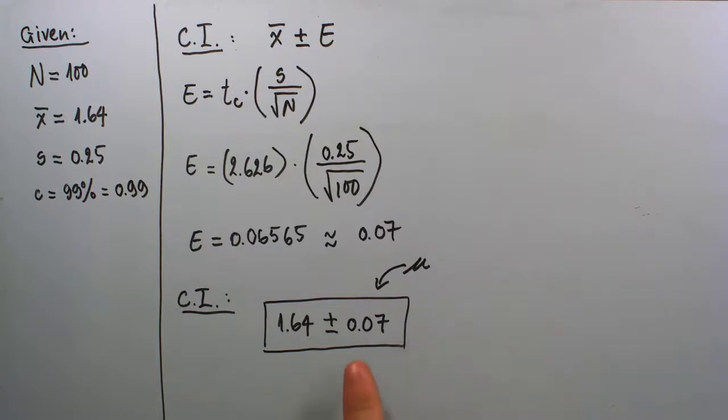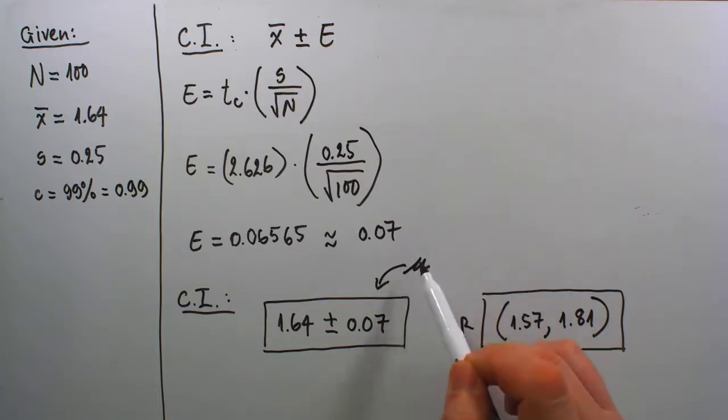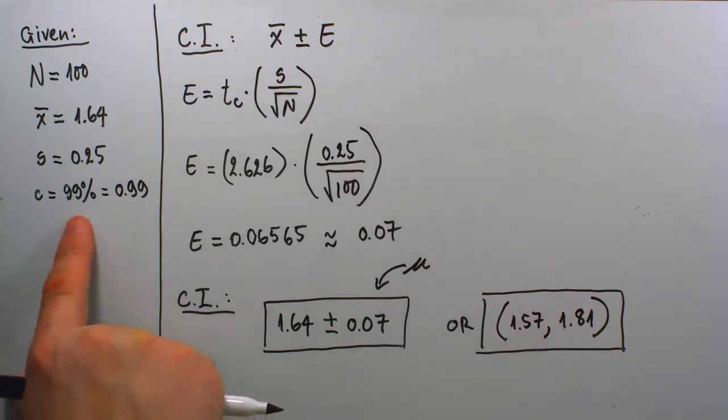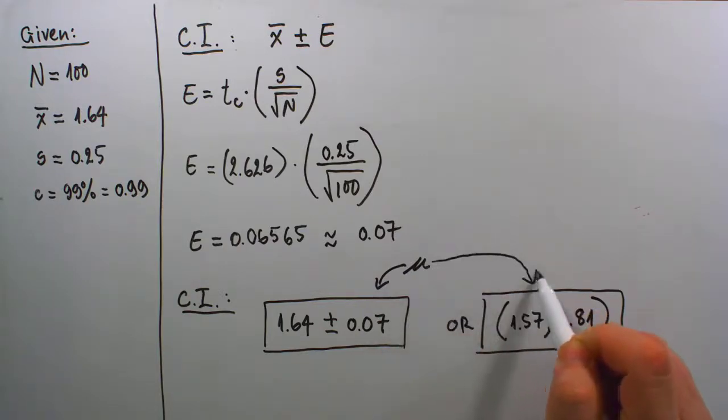In case you're asked to write your interval in traditional format, we can subtract this margin of error from the sample mean to obtain the lower end: $1.57. The high end is $1.71 by adding 0.07 to $1.64. As a different way to interpret this final answer, the national mean gas price on June 1st, 2020 is guaranteed at 99% confidence level to be anywhere inside this interval where low is $1.57 and high is $1.71. This kind of interval is usually called the interval in traditional format.